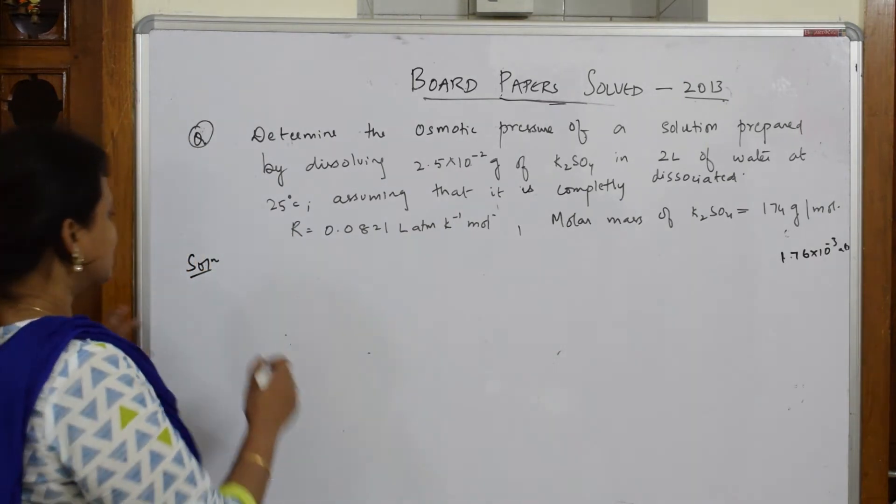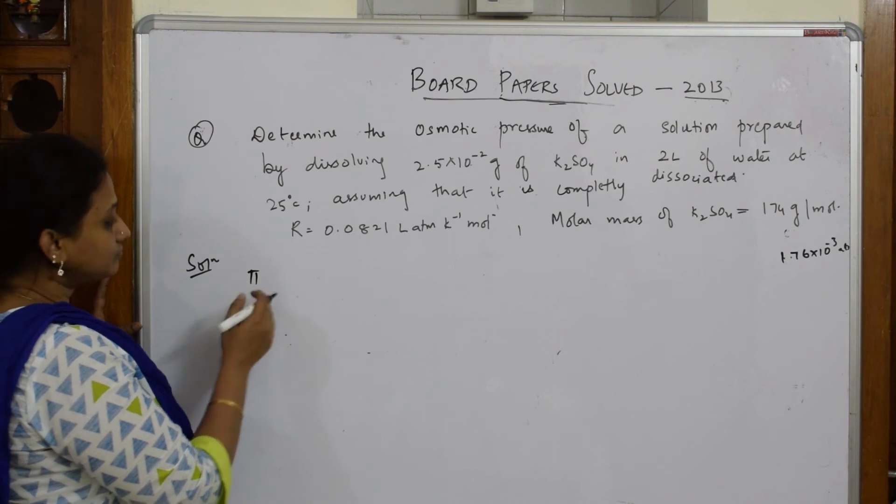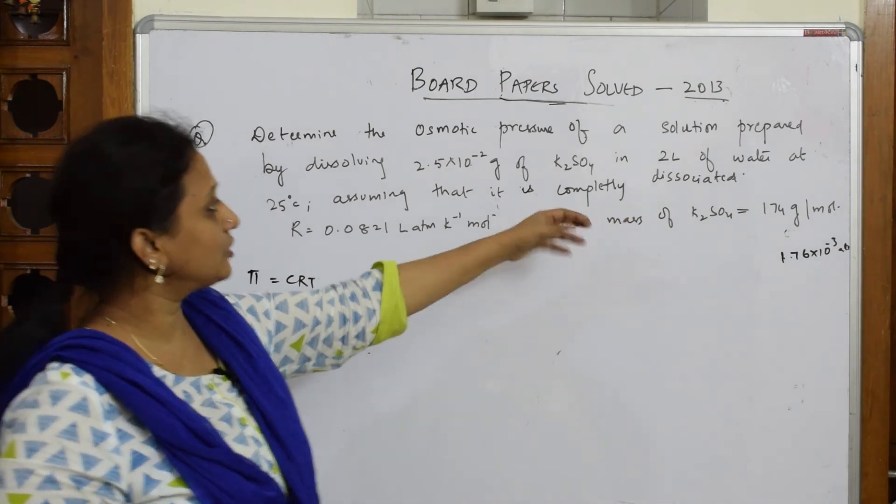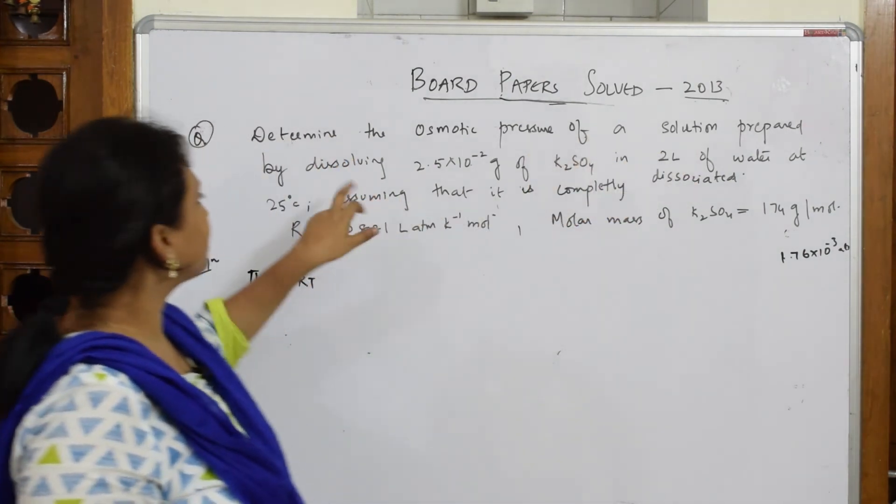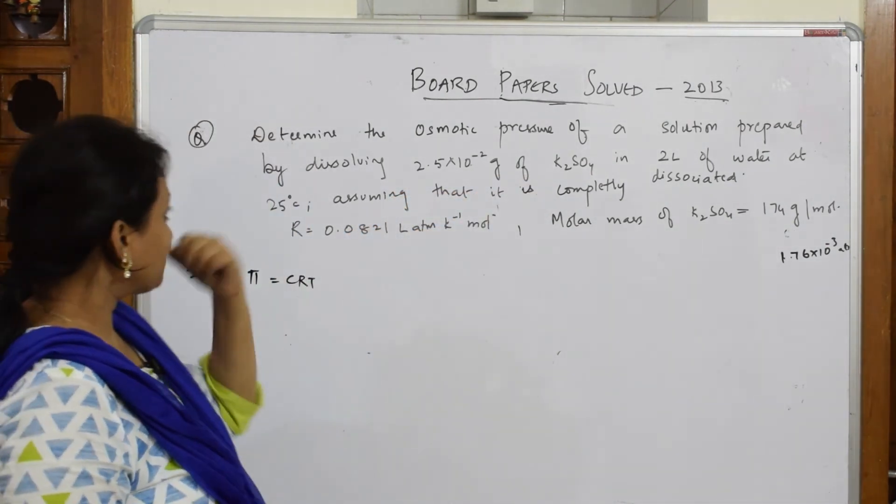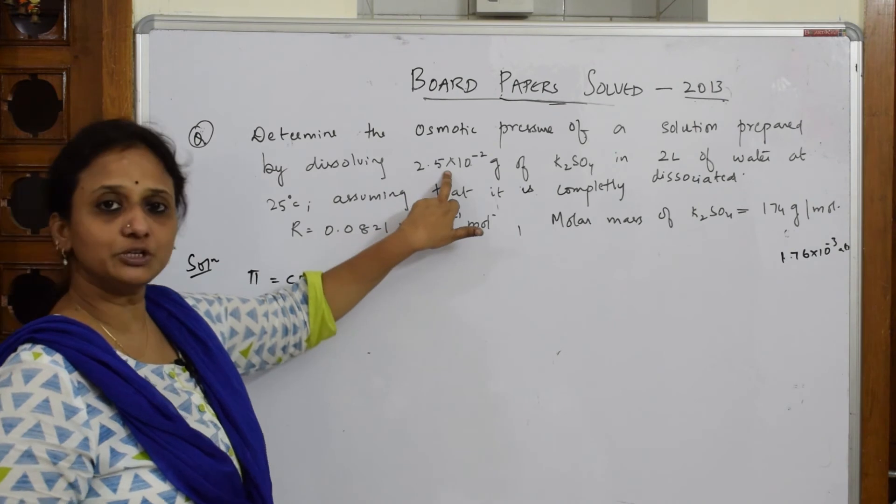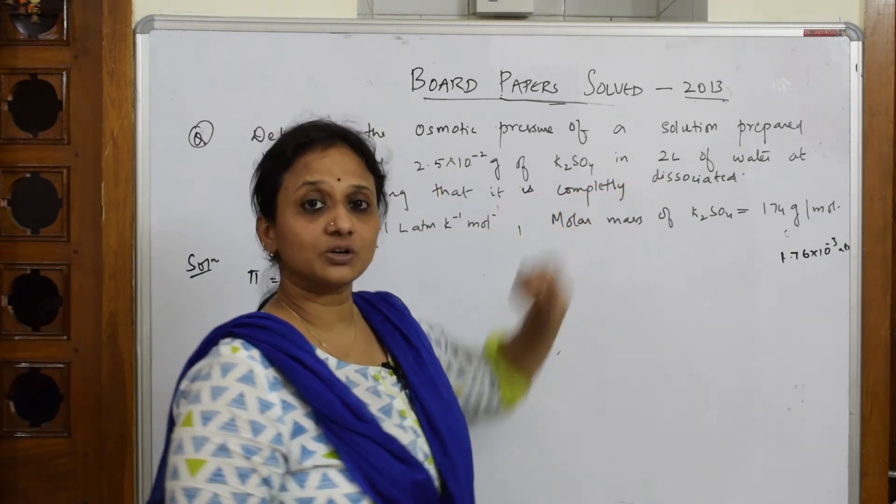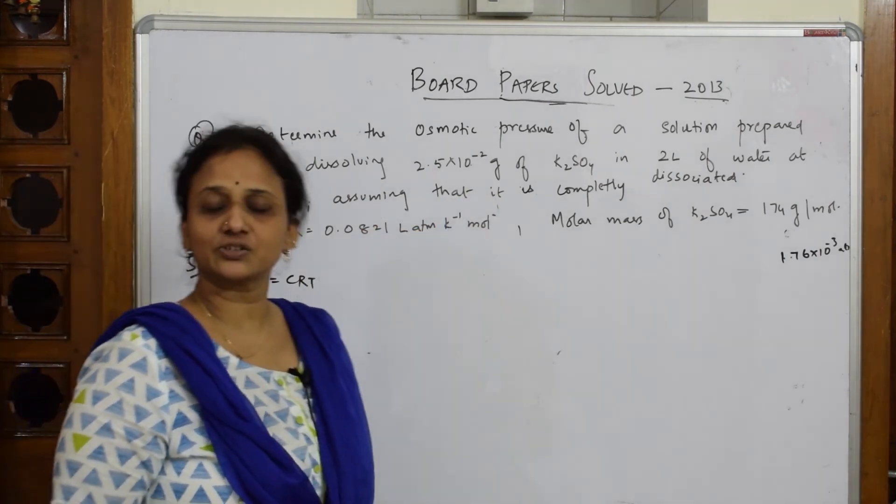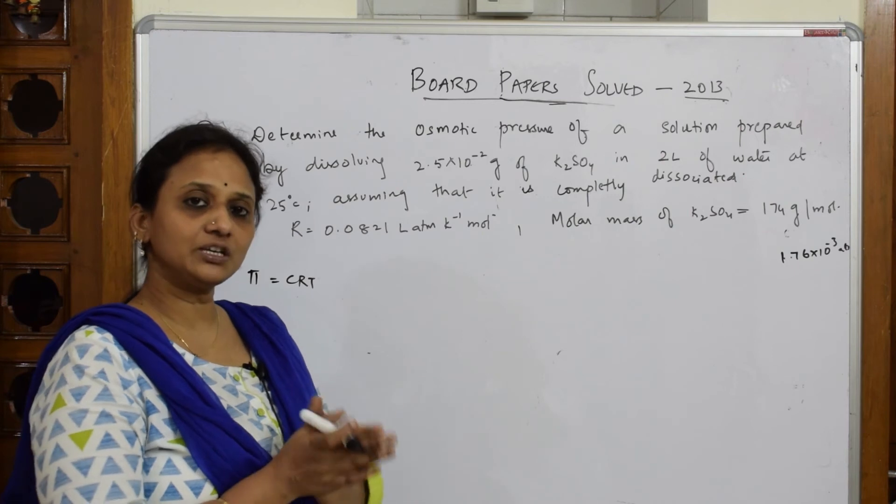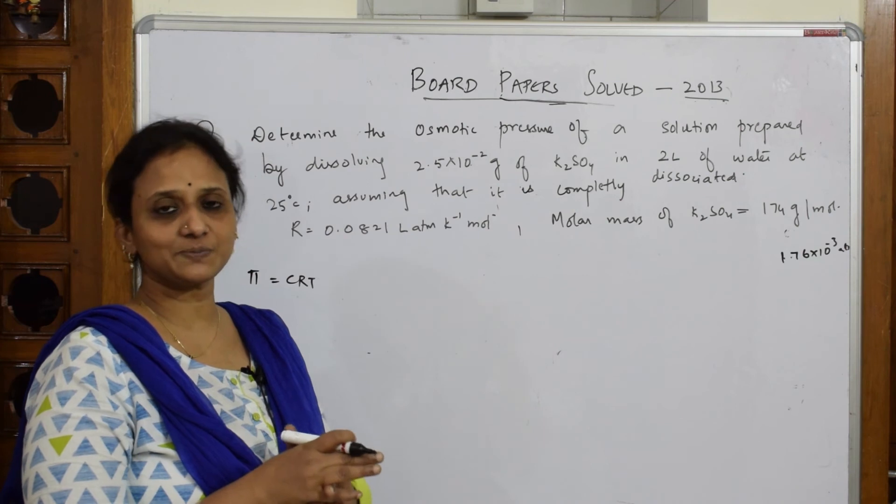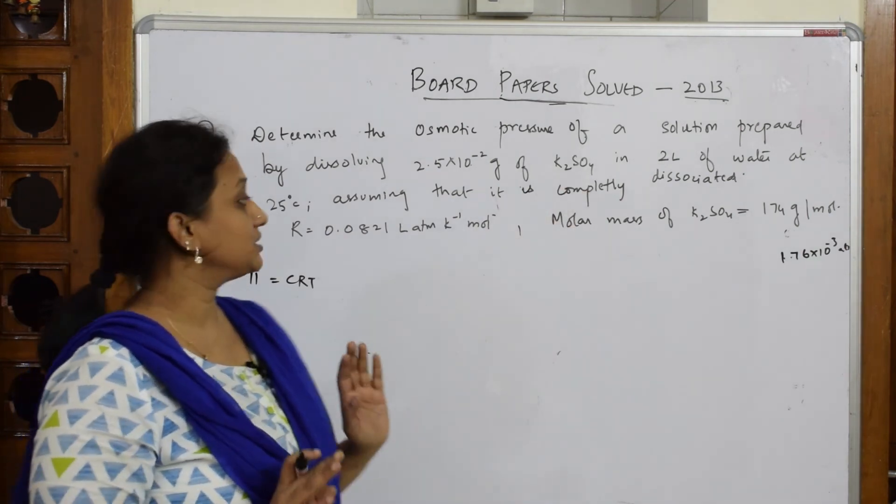Let's write that: π = CRT. This is done. Let me see further. Osmotic pressure of a solution prepared by dissolving 2.5 × 10^-2 grams of K2SO4. That means W2 is given to us, in 2 liters of water - volume also is given. Assuming that it is completely dissociated, so they've included the van't Hoff factor here. Your K2SO4 is dissociating into 2K+ + SO4^2-.